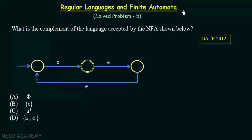In this lecture we will be discussing another solved problem from regular languages and finite automata. This problem is from GATE 2012. The question asks: what is the complement of the language accepted by the NFA shown below?